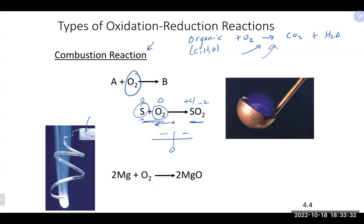Magnesium burning in oxygen is another example: two things make one thing (combination/synthesis), it has O₂ (combustion), and as we discussed, it's a redox reaction with magnesium being oxidized and oxygen being reduced. This is a famous experiment — it produces a very bright light, so you shouldn't look directly at the burning magnesium, even though it's tempting to observe what's happening.